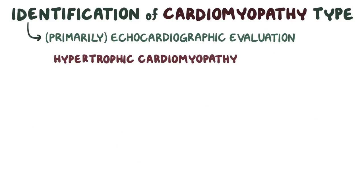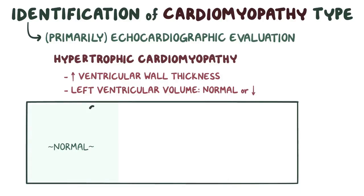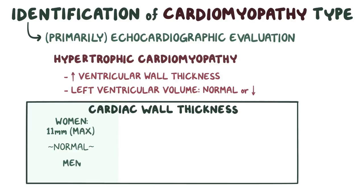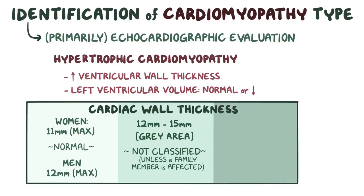Hypertrophic cardiomyopathy is characterized by increased ventricular wall thickness, or mass, and the left ventricular volume may be normal or reduced. The normal cardiac wall thickness for women is up to 11 mm, and for men is up to 12 mm. Between 12 and 15 mm there's a gray area, which isn't classified as hypertrophic cardiomyopathy unless a family member is affected as well. But any individual with a cardiac wall thickness over 15 mm is diagnosed with hypertrophic cardiomyopathy.